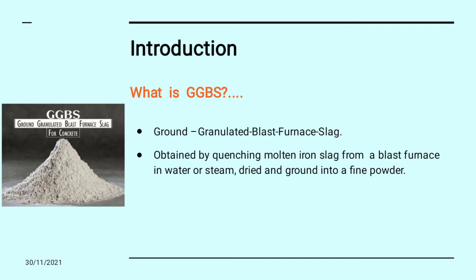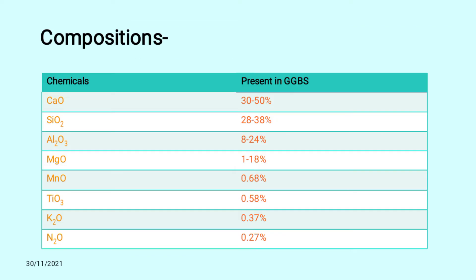So, Introduction — what is GGBS? It refers to Ground Granulated Blast Furnace Slag, and it is obtained by quenching of molten iron slag from a blast furnace in a water stream, then dried and ground into a fine powder.